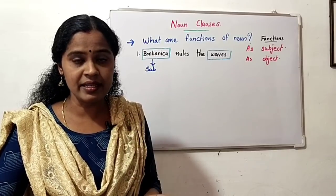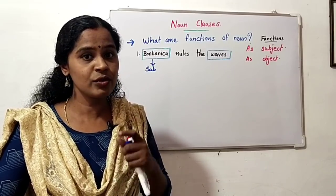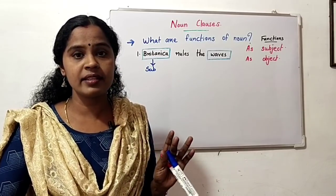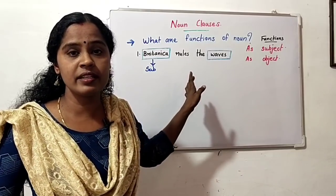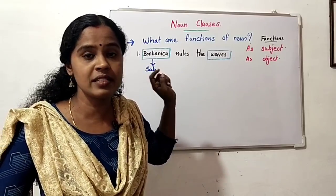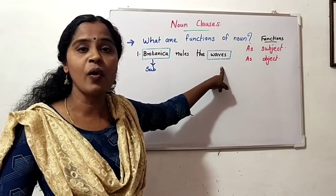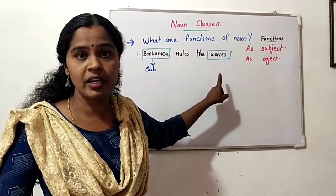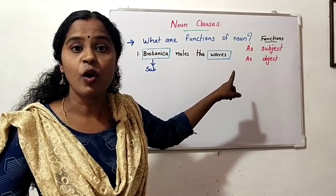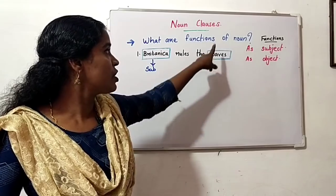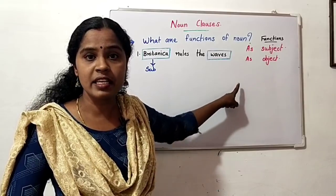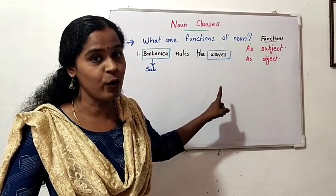In a sentence, if you ask 'who or what' you get a noun. In the predicate portion, we are getting one more noun — that is 'wave' — and that is the object. So the next function of noun is as an object.